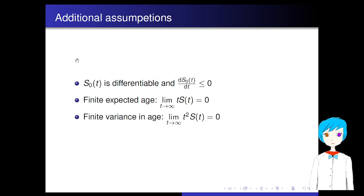There are some additional assumptions on the survival probability S(t). S(t) is differentiable and the derivative of S(t) is always less than or equal to 0, which means that the survival probability is always non-increasing. The expected age or the average age is finite, which means that limit t goes to infinity, t times S(t) equals 0. The variance in age is also finite, which means that as t goes to infinity, t squared times S(t) goes to 0.